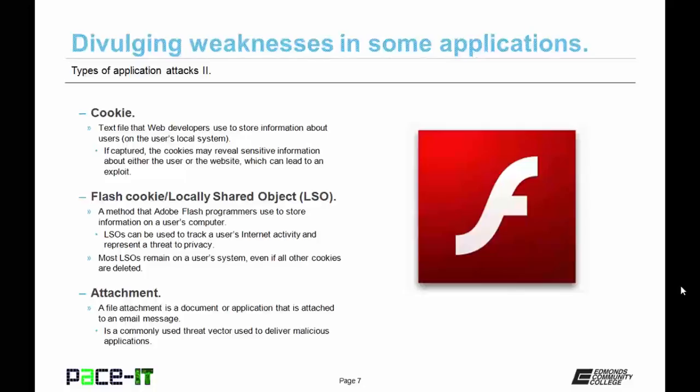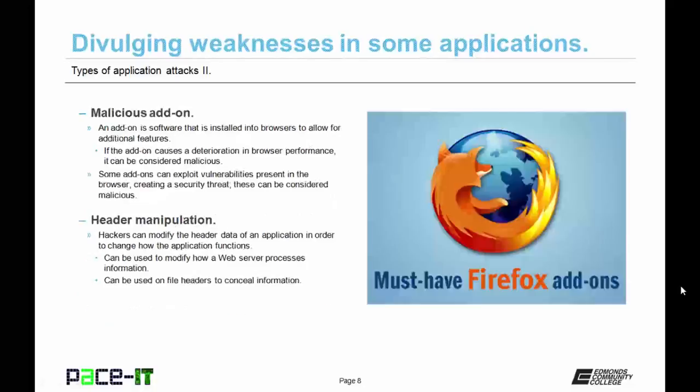The file attachment may also represent a weakness. A file attachment is a document or application that is attached to an email message. Attachments are a commonly used threat vector and they're used to deliver malicious code or applications to a user.